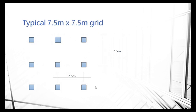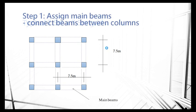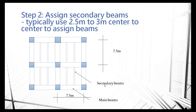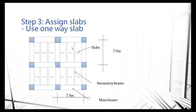Draw a typical section. Here is one example: a column with a 7.5 meter center to center spacing. The first step is to connect beams between columns — we call this the main beam. The second step, you assign the secondary beams. Normally for secondary beams in Hong Kong reinforced concrete, 2.5 to 3 meter center to center is an optimum size and the reinforcement is much more economical. That means for 7.5 meters divided by 2.5, at least three intervals — assign two numbers of beams. The third step is to assign the slab. Normally we call this a one-way slab, where the loading transfers from left to right.